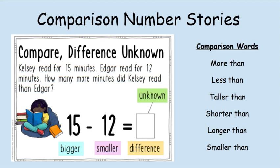Here's an example. Kelsey read for 15 minutes. Edgar read for 12 minutes. How many more minutes did Kelsey read than Edgar? So we know that Kelsey read 15, and we know that Edgar read for 12. So we're trying to find out how much more Kelsey read. So our bigger number minus our smaller number will give us our unknown, our question mark.